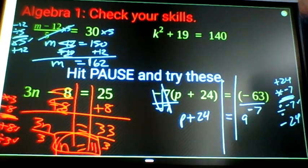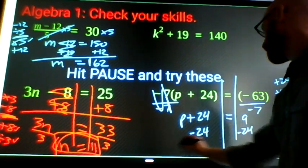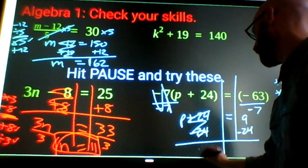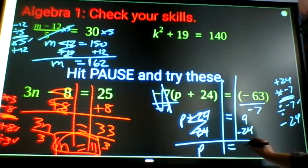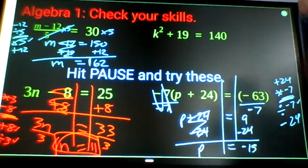Subtract 24 from both sides, cancel, p equals negative 15.